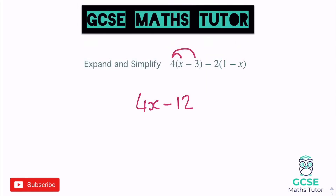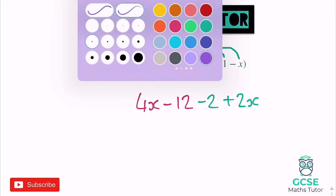Moving on to the next bracket, being careful because we've got a negative 2 at the front. This time it's negative 2 times the number first: negative 2 times 1 is negative 2, so take away 2. Then negative 2 multiplied by negative x — a negative times a negative becomes positive — so that's positive 2x.